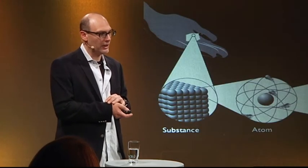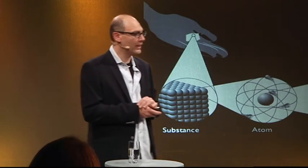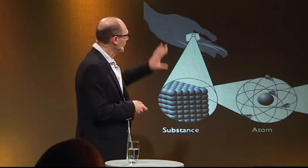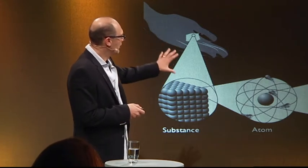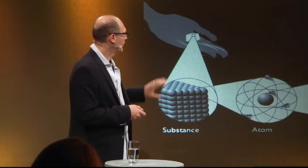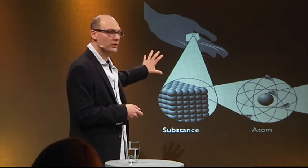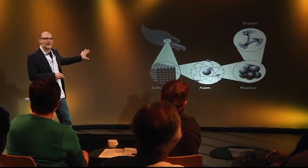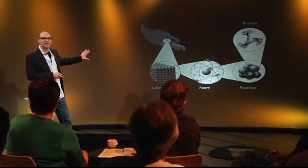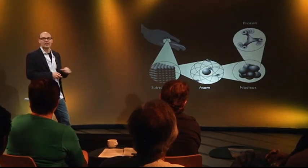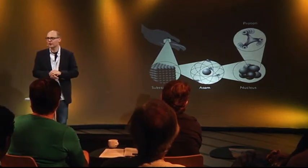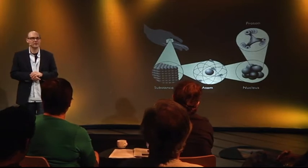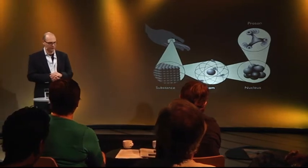We can actually in the laboratory construct this. If you see the proton, the proton is made by quarks, the quarks make the nucleus, the nucleus makes the atom. Then you zoom out a little bit, you see crystals, and at the end you see a sugar cube. A sugar cube is made of the same stuff we are made of.